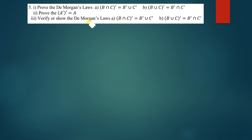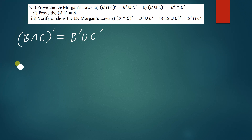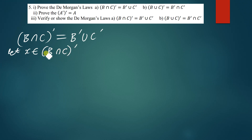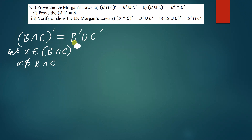The question is: prove De Morgan's Laws. The first one is (B ∩ C)' = B' ∪ C'. This is a straightforward question. We are going to use an arbitrary element x. Let x be a member of (B ∩ C)'. If x is a member of (B ∩ C)', it means that x is not a member of B ∩ C.